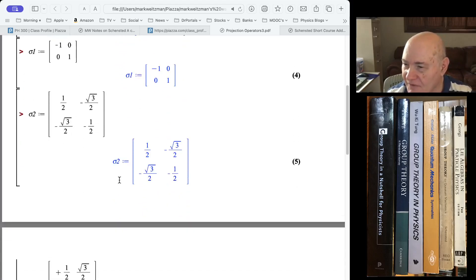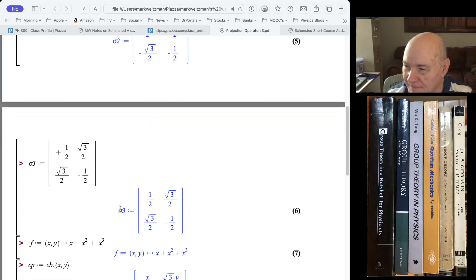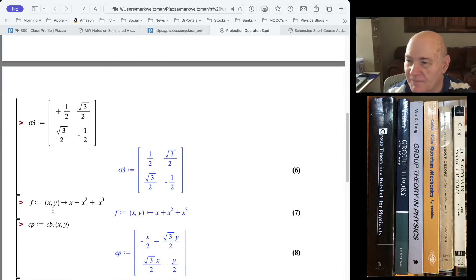Sigma 2 and sigma 3 are a little harder to get, but you can verify that these are them. You can use some geometry to get these. It's not hard to get reflection matrices.